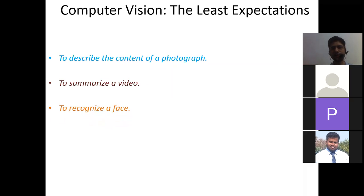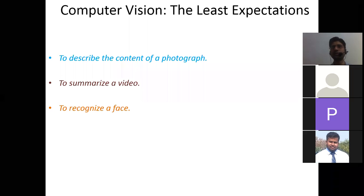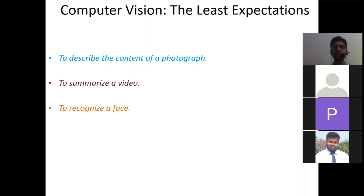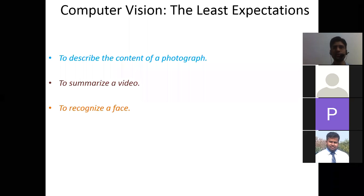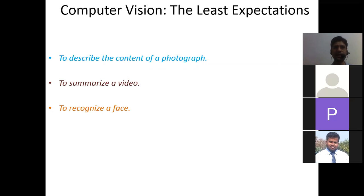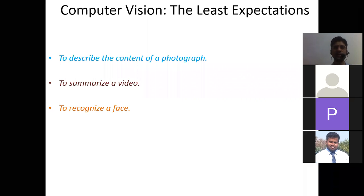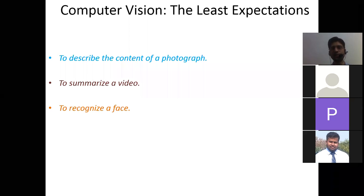To recognize a face is also a basic requirement from computer vision. In artificial intelligence we are mimicking the behavior of human beings. Even a child quickly learns to identify who is their mother, father, or uncle. So this is what we want computer vision to implement — at least recognize a face, summarize a video, or describe the content of a photograph.